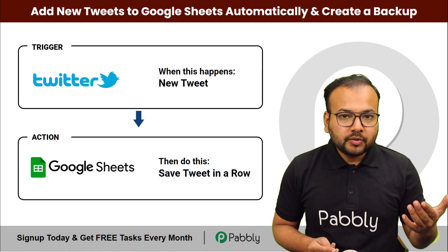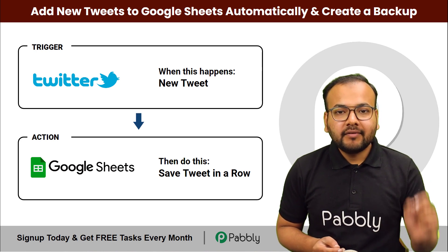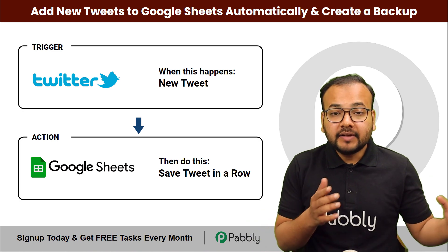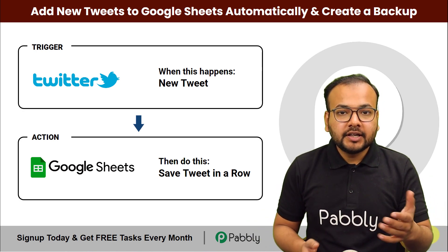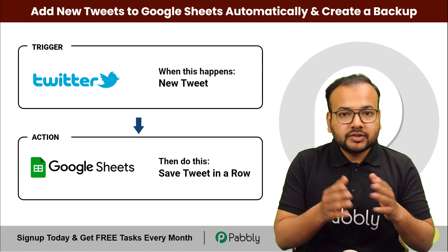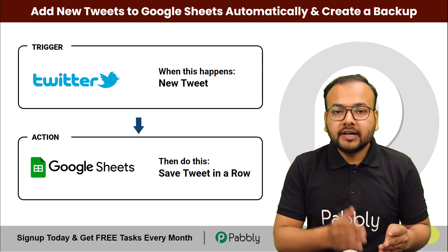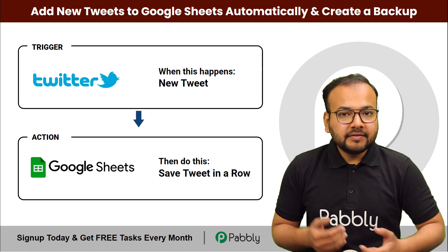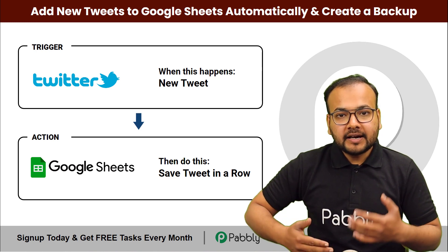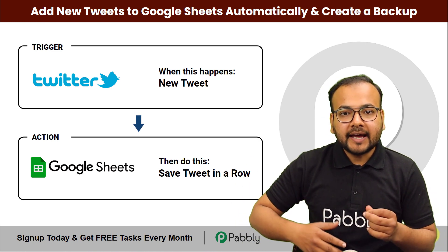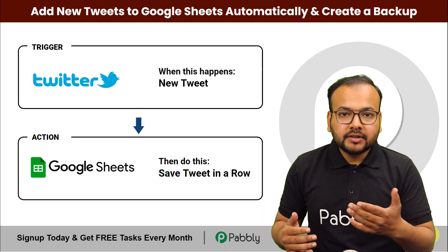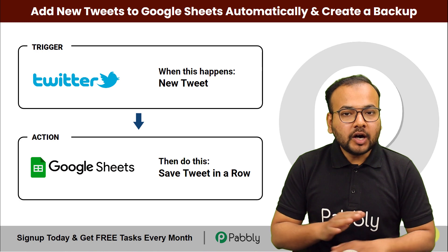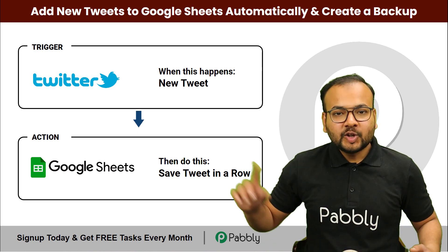With this automation you do not have to manually copy the data of your tweets and paste it into Google Sheets. It will happen automatically — whenever you share a tweet, the text, images, or anything you put into the tweet will be saved into your spreadsheet automatically, creating a backup and track record of your tweets so you can analyze the data in the future. We are going to set up this automation without any coding, super easily.